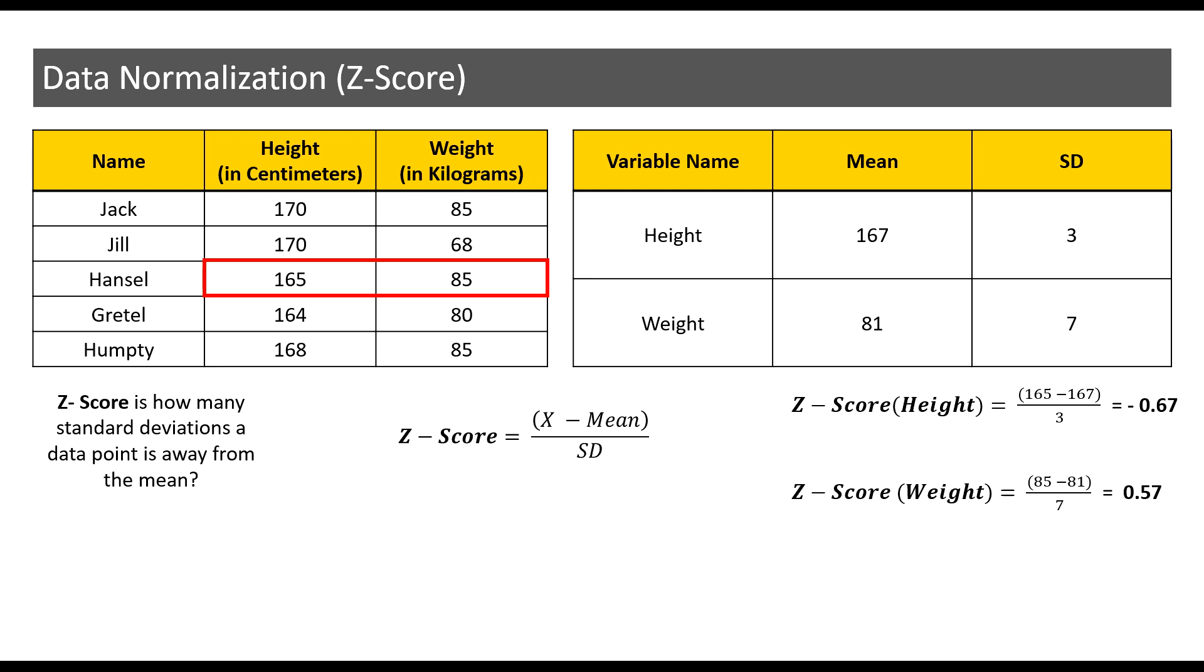Now Hansel's Z-score for height is his height, which is 165, minus the mean height, which is 167, divided by the standard deviation, which happens to be 3.